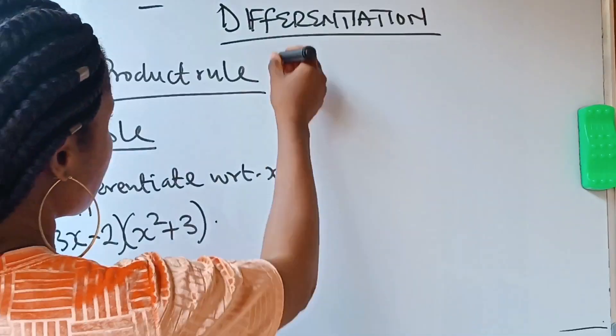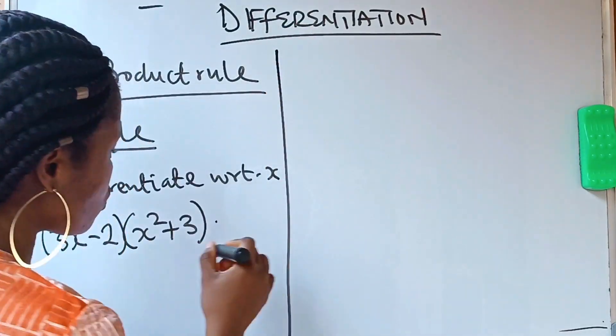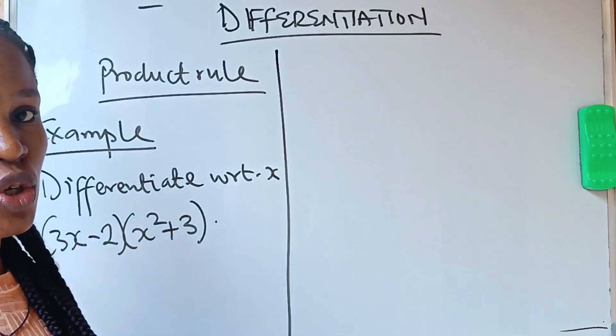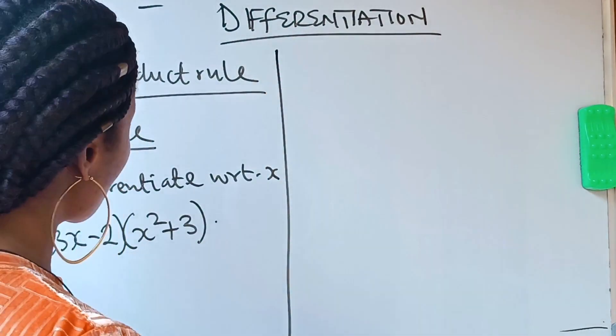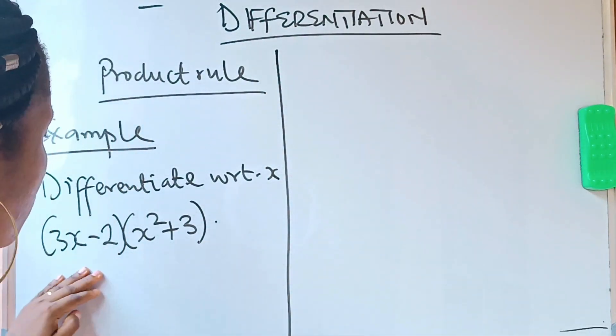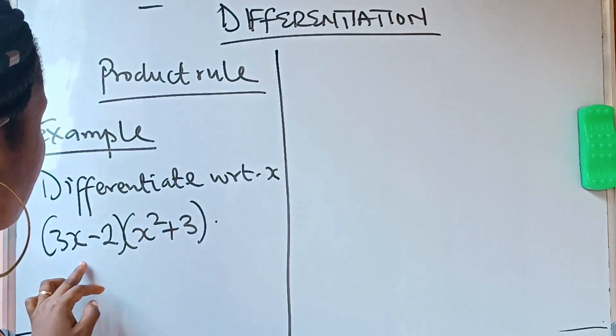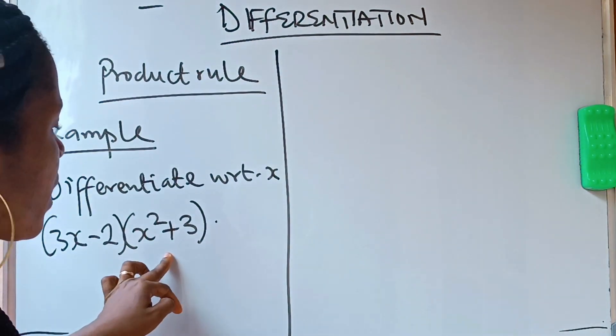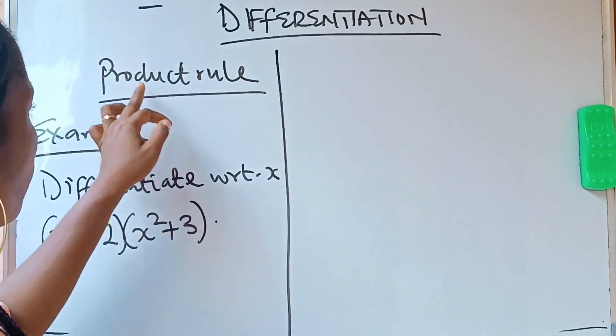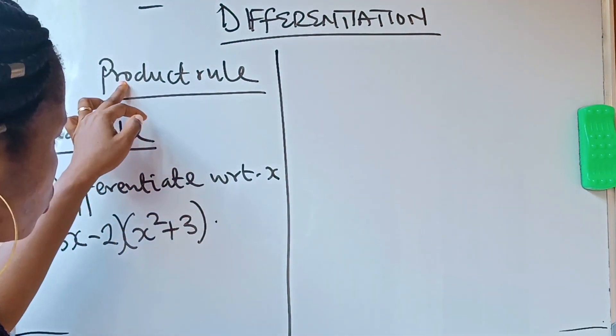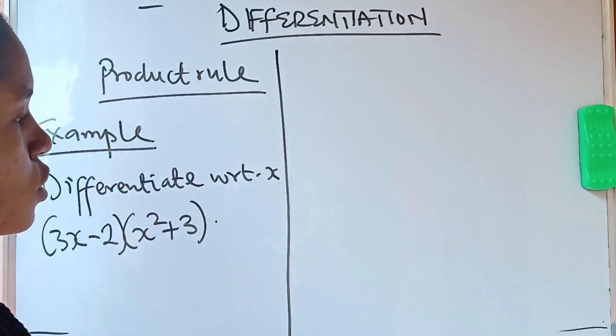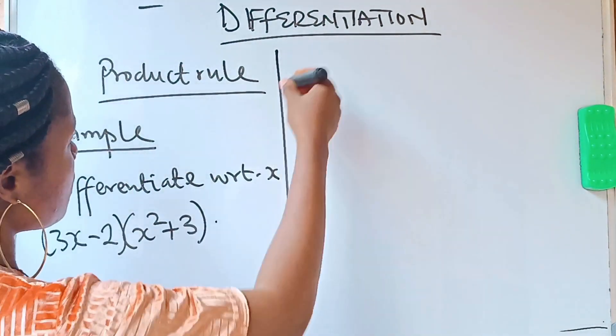Product rule is the rule that you use in differentiation when you are multiplying two expressions. Notice that this one is multiplying this one, so you are going to use product rule. The product rule — this is it.